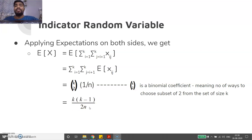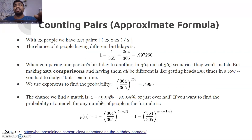With n equal to 365, solving for k gives approximately 23. So with 23 people in the room, we have C(23,2) = 253 pairs to check, calculated as k(k-1)/2 = 23×22/2 = 253.